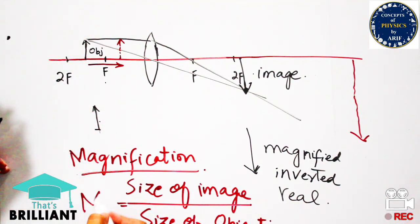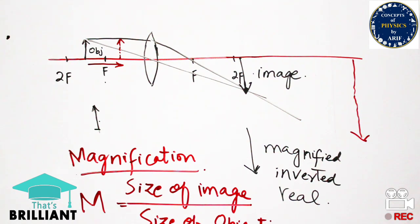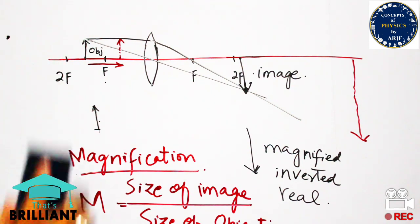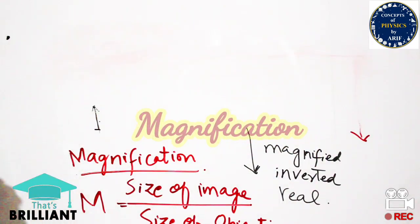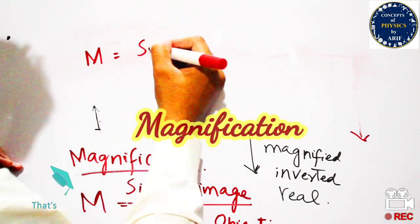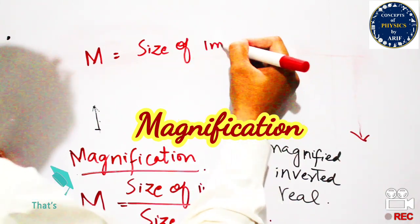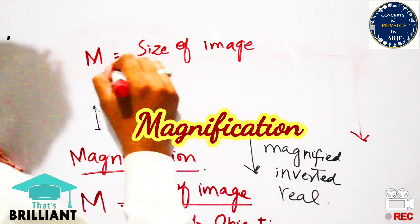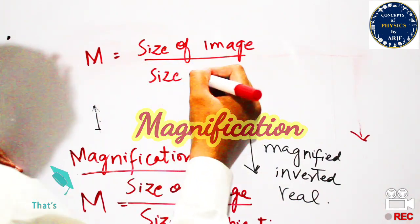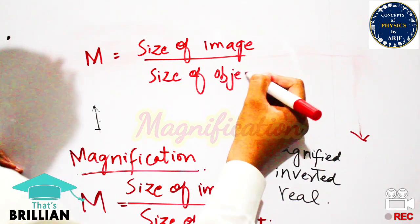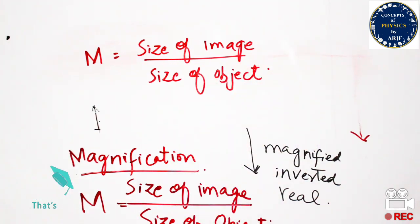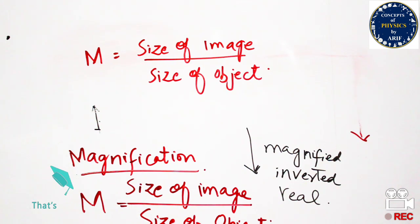When the size of the image is very large — for example, size of image is 10 and size of object is 2 — if we divide these, the magnification will be 5. It means the image is 5 times the object after using the convex lens. The magnification formula is size of image divided by size of object.